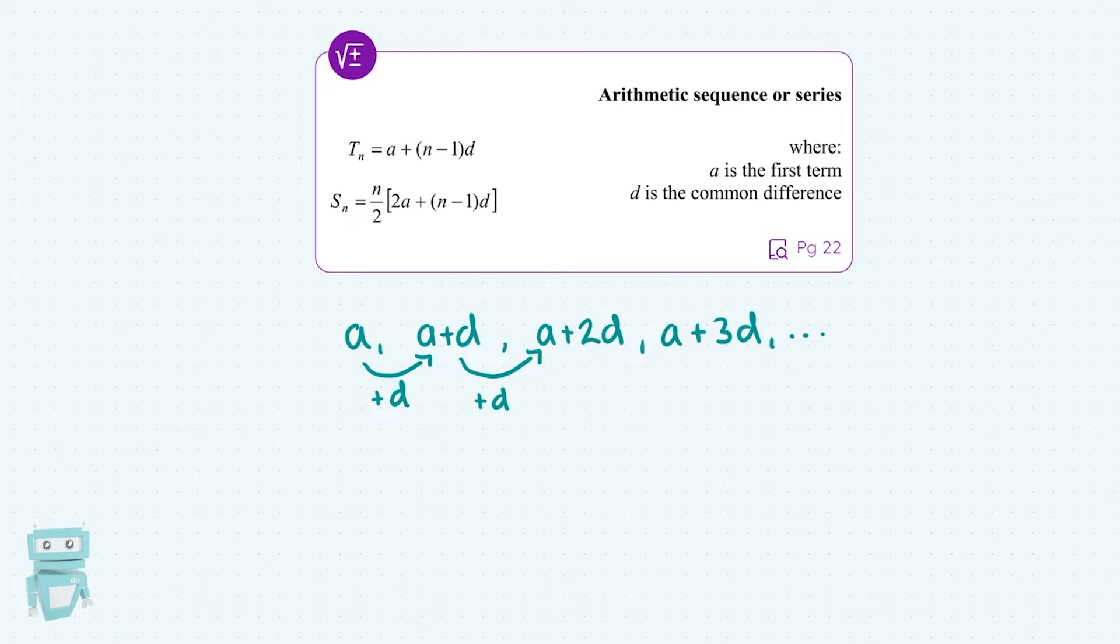There are two key features of every arithmetic sequence, and they're noted here in the log tables. The first is that A is the first term. So whatever number is in the first position, we're going to let that equal A. And secondly, D is the common difference. That's whatever number you're adding or subtracting on each time to get the next term.